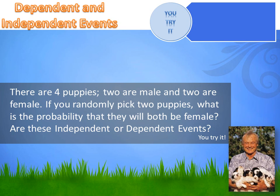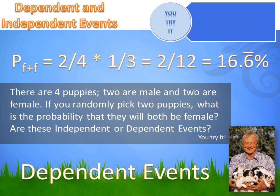There are four puppies — two male and two female — and you're going to randomly pick two. What's the probability that both will be female? Are these dependent or independent? On the first pick, there are two females out of four, so your chances are 50%. But we're not going to replace the puppy — you're keeping it. So when you pick the second puppy, there's only one female and two males left, and your odds have changed. These are dependent events. The probability of drawing a female and then another female is two-fourths times one-third, or 2 over 12, or 16.6 repeating percent.